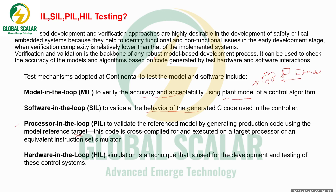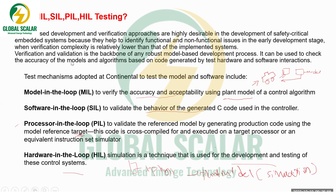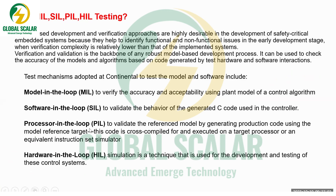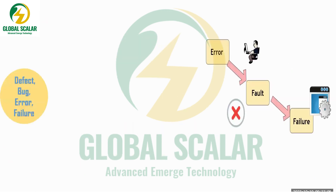Hardware in Loop is used for developing and testing the complete control system — the complete vehicle. It includes all physical components, and whichever physical components are not available are created as a plant model in Simulink. MIL, SIL, PIL, and HIL are the phases of embedded testing.